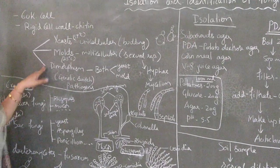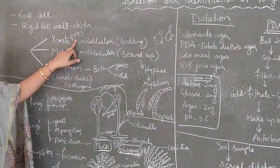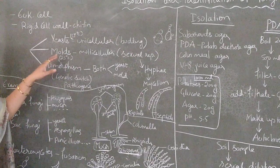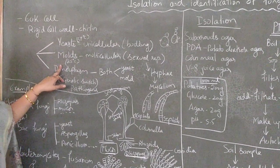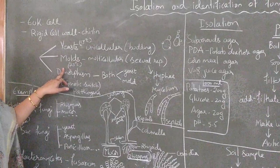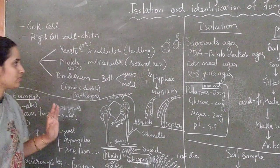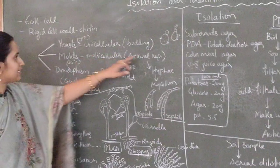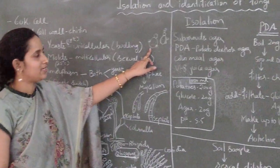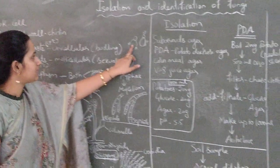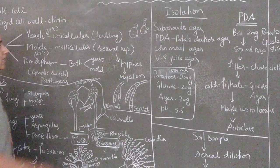Yeast will be grown at 37 degrees centigrade, that is at body temperature, whereas molds will be grown at 25 degrees centigrade, that is room temperature. You can see the light micrograph of the yeast where budding can be seen clearly — this is a mother cell and these are the smaller daughter cells.